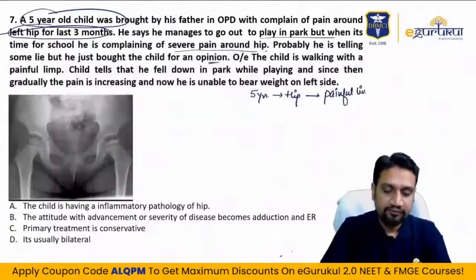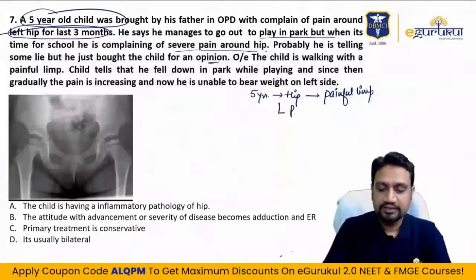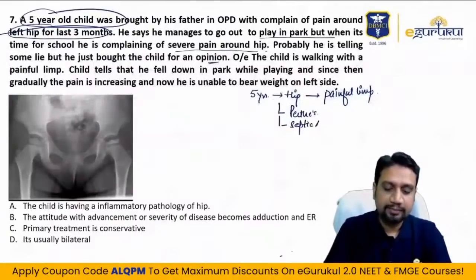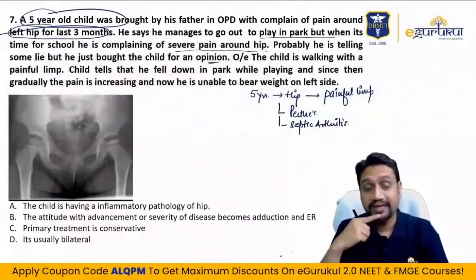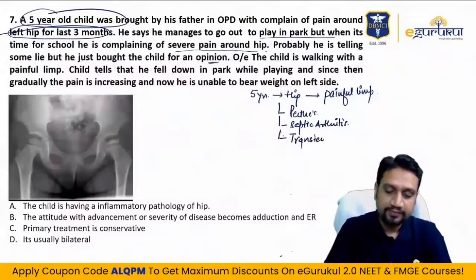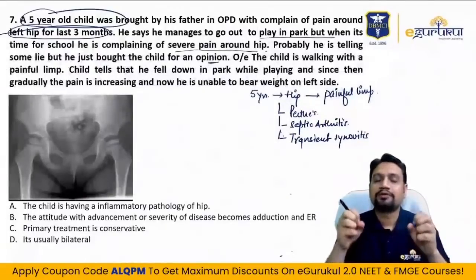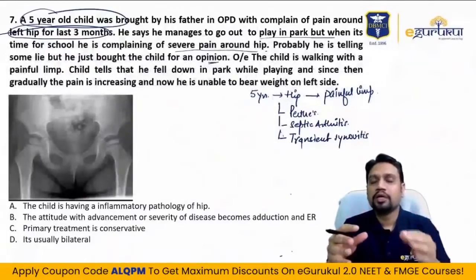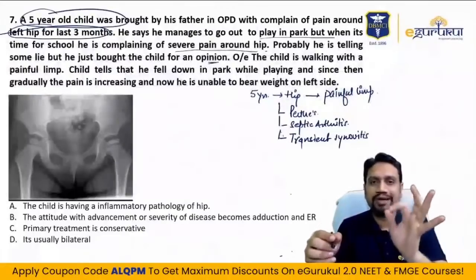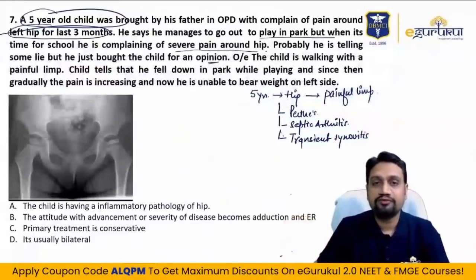Five-year-old child, hip, painful limb — differentials: Perthes disease, septic arthritis, and transient synovitis. Close the notebook and think: five-year hip painful limb — what are the causes? Perthes, septic arthritis, transient synovitis. Now what points favor each particular diagnosis?